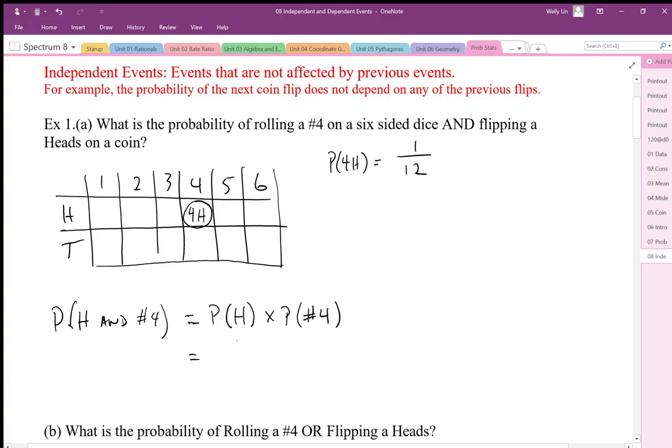So the probability of heads is one half, and the probability of rolling the number four is one out of six. And we can see that because these are independent events, we can actually calculate the same probability by multiplying these two probabilities together.